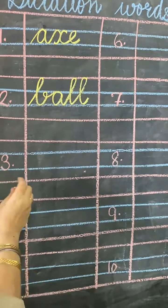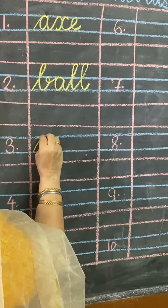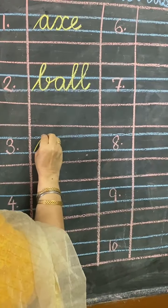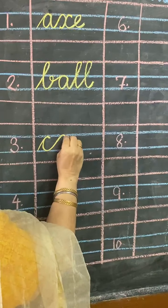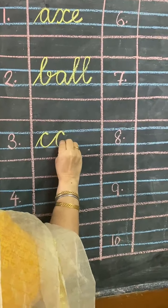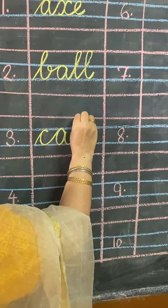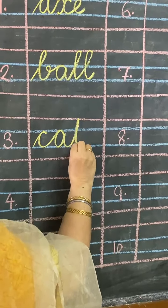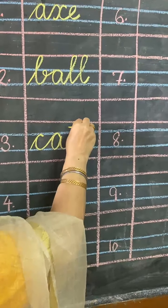Number 3, C for Cat. A will come in two middle lines and T will come in upper three lines. C, A, T — cat.